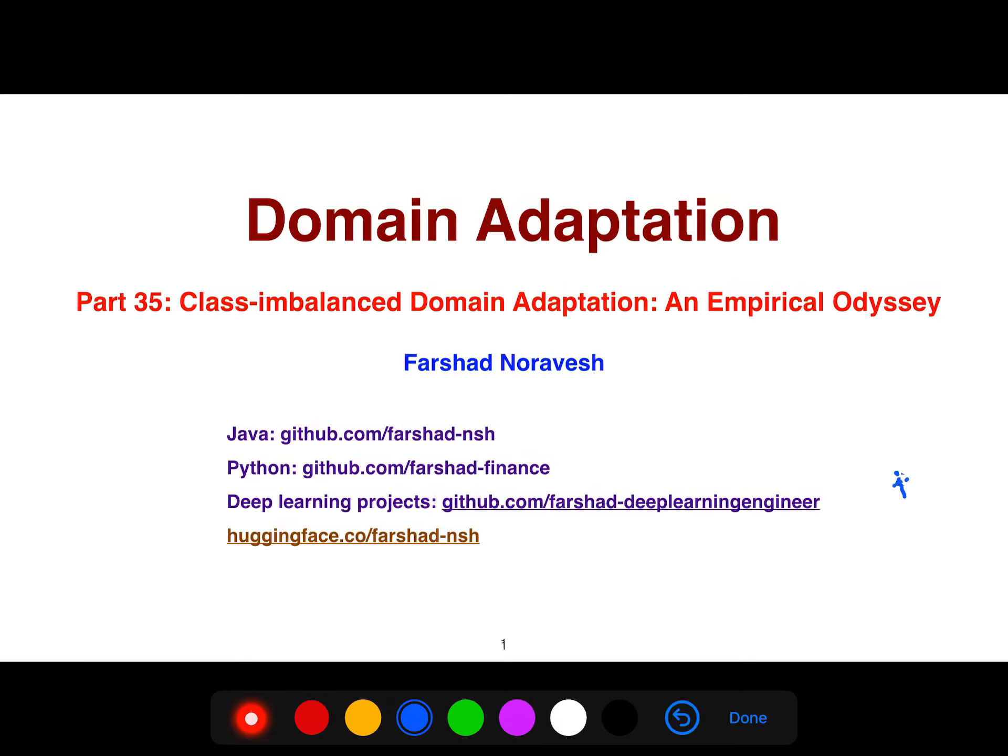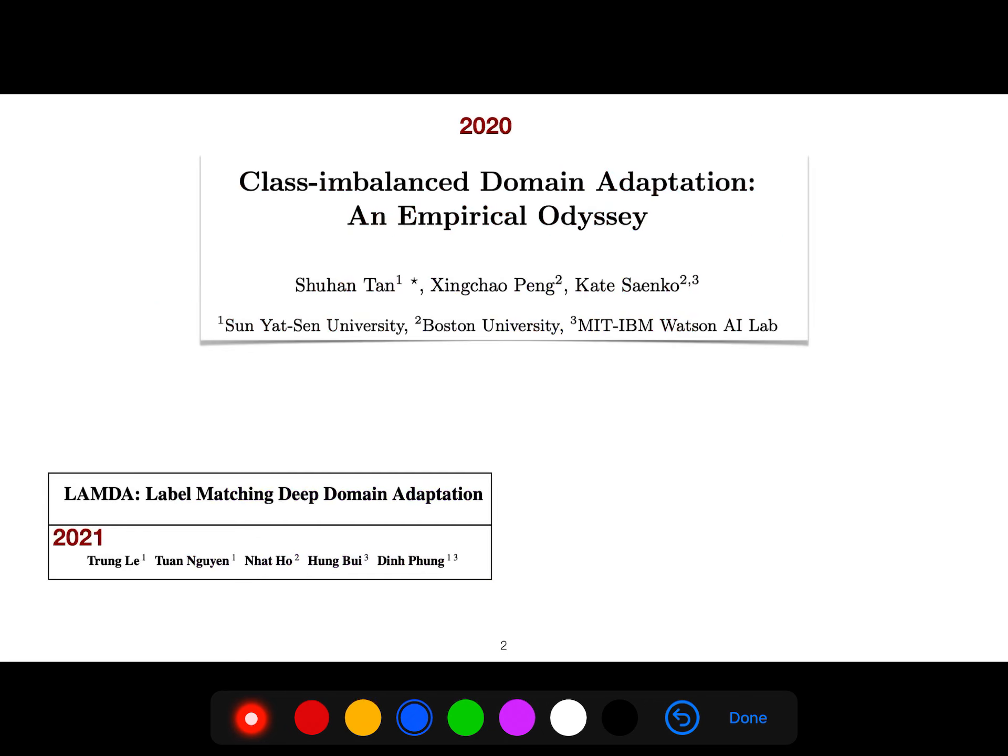In this video, I'm going to be explaining another important article about domain adaptation. The title of this article is Class Imbalanced Domain Adaptation and Empirical Odyssey. This paper is from 2020.